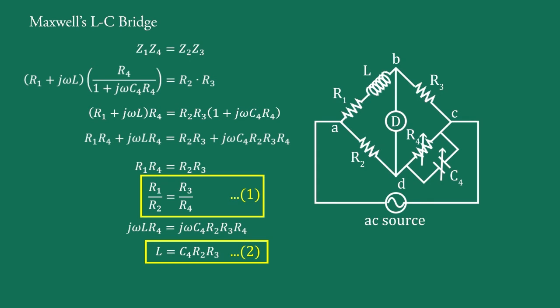R4 is not present in condition 2. And the adjustment of C4 will set condition 2 and will not upset condition 1, because C4 is not present there. The value of inductance L can be determined from equation 2 when the bridge is balanced. When balanced, the minimum sound is heard in the headphones, or a maximum separation is obtained between the slits of a null detector.